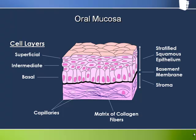Certain types of oral mucosa are naturally keratinised, while others can become keratinised as a result of chronic irritation or because of other disease processes.